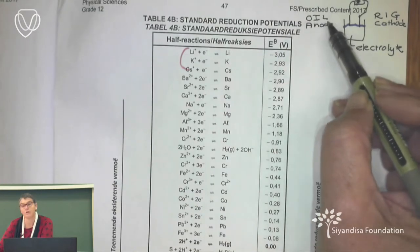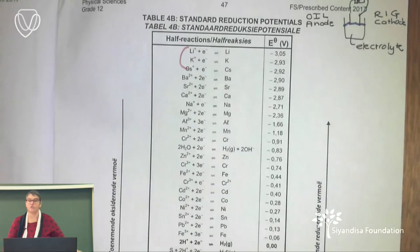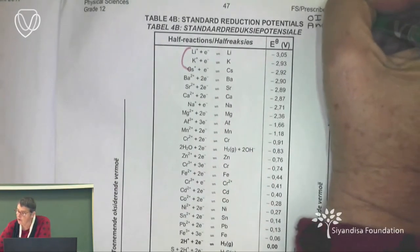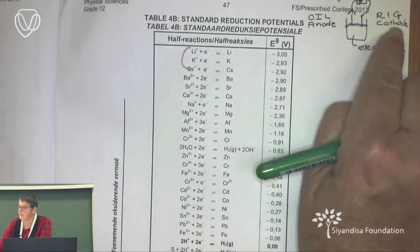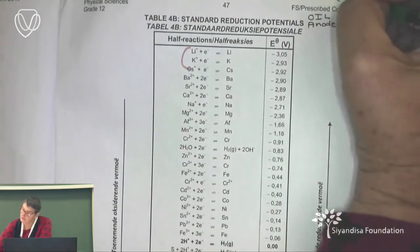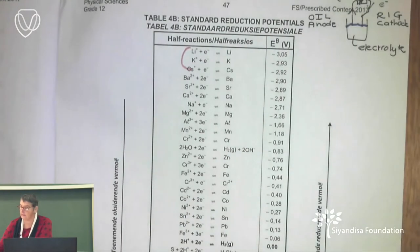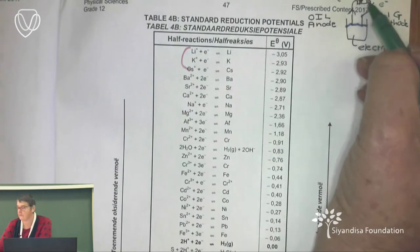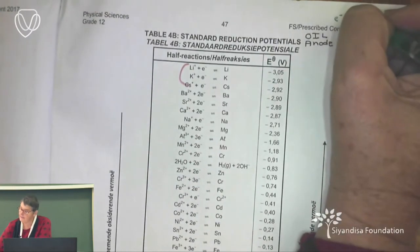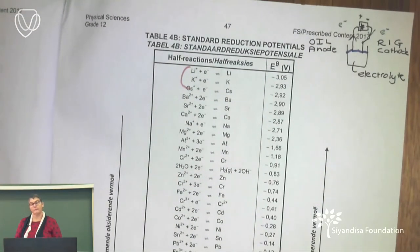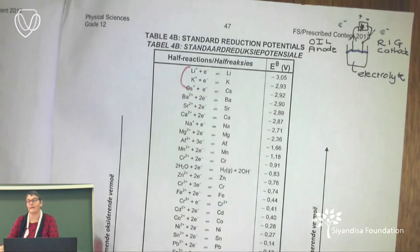Oxidation is loss, so electrons are lost at the anode and they move across to the cathode. Reduction is gain, so those electrons are moving to the cathode. This side wants electrons; the other side is giving away electrons. So this is going to be the positive side of my cell, while the anode side is the negative. In exams, they like to swap it around, so we'll look at a question to apply all of this.